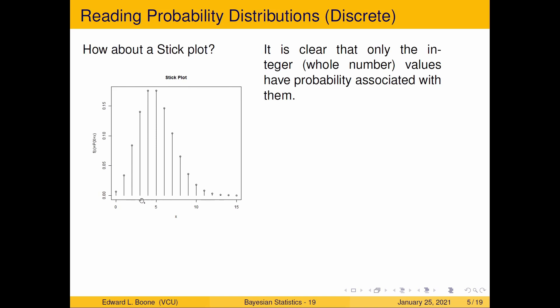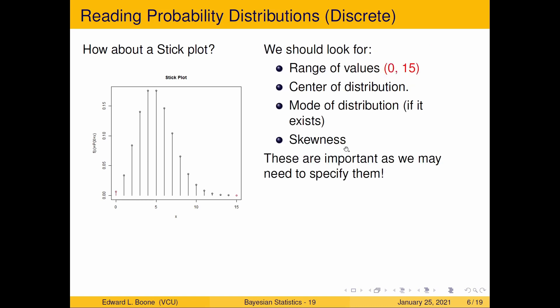In this case, the values are integers or whole numbers. All of these heights of these sticks represent the probability associated with that value. It's pretty straightforward, makes it easy — you know that it's clearly discrete. These are things we should look for.